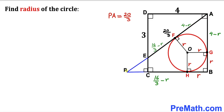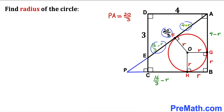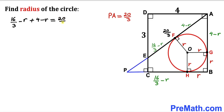In our final step, we observe that segment PF is 16/3 minus r, segment FA is 4 minus r, and the whole side length PA is 20/3. So PA equals the sum of PF and FA: (16/3 − r) + (4 − r) = 20/3.